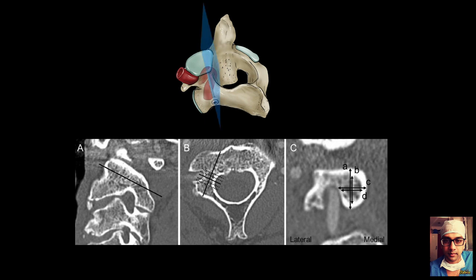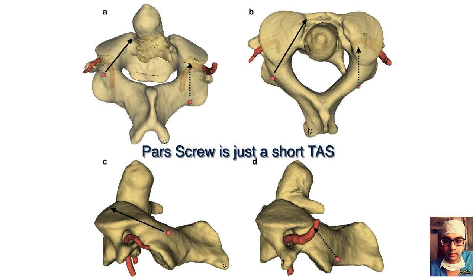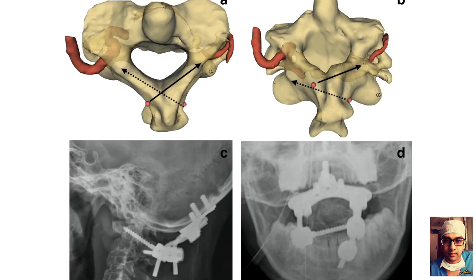Pre-operative CT multiplanar reconstructions are essential to confirm adequate room along the screw path without vertebral artery injury. The pars screw is sometimes considered safer, but it is just a short transarticular screw — safe only if you stop short of the vertebral artery cave. If you stop short, the screw may only be 12–14 mm, which is very weak. Therefore, if a pedicle screw is not possible, a laminar screw is preferred, as the C2 lamina is invariably thick enough to accept a good screw.